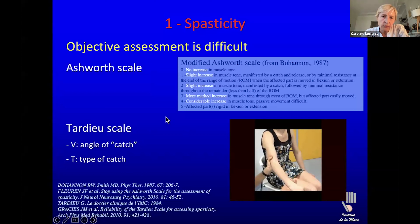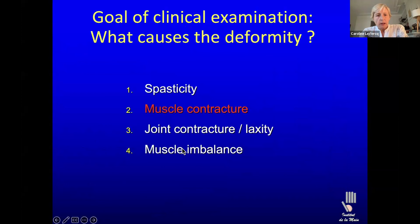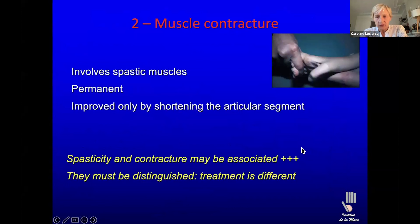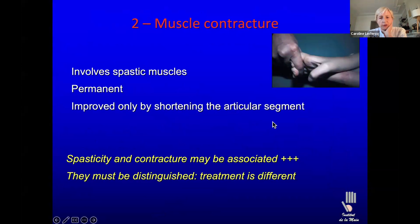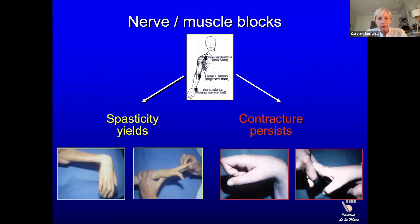The deformity is caused by spasticity to start with, but there are other problems which add up. The first is muscle contracture — after being spastic for months or even years, those muscles can start getting fibrotic and then there is contracture. There can also be joint contracture and muscle imbalance. Spasticity is mostly on flexors and pronators; it will resist stretching but eventually yield. It comes together with hyperreflexivity.